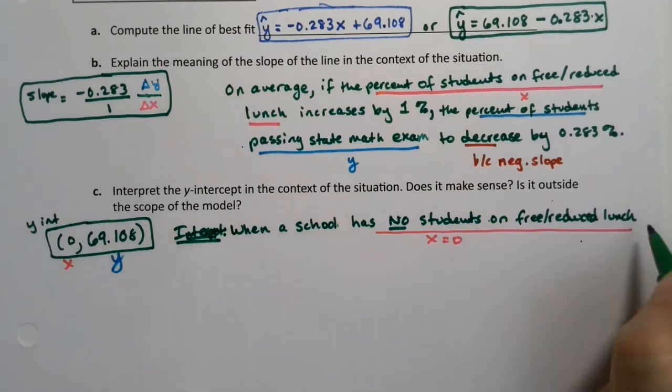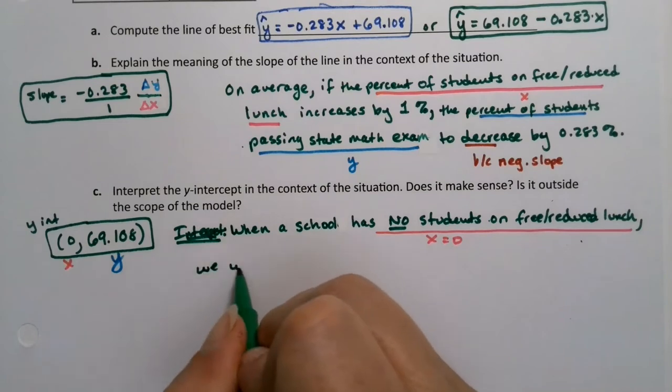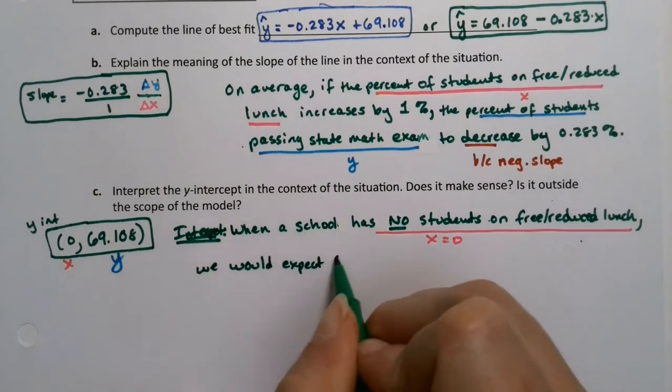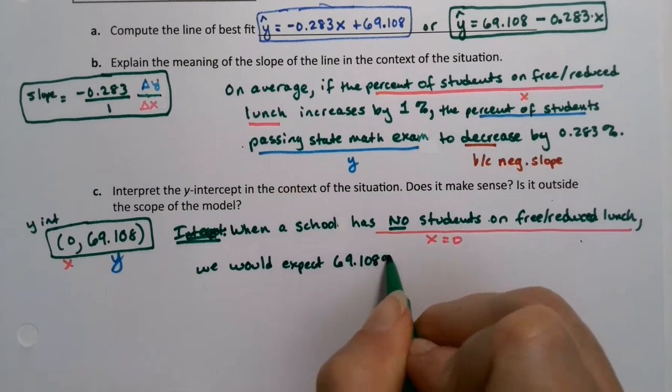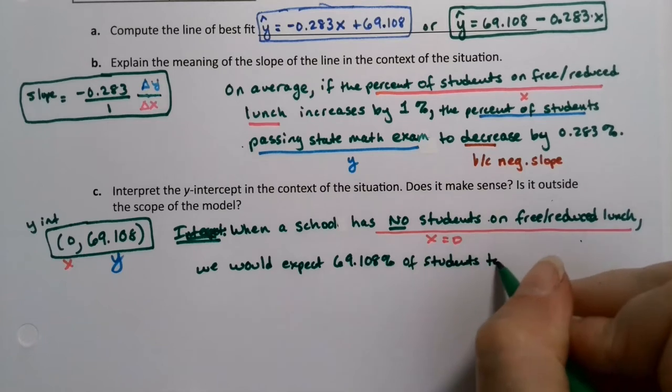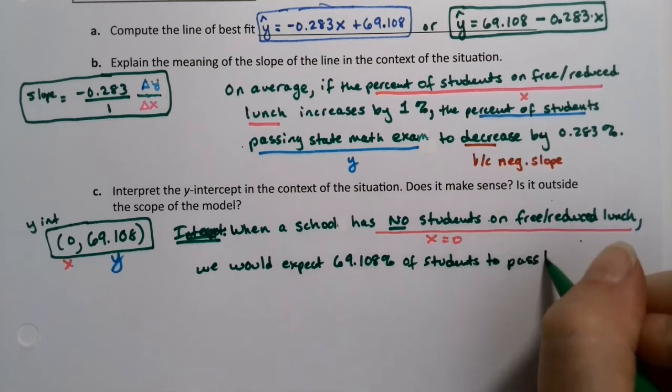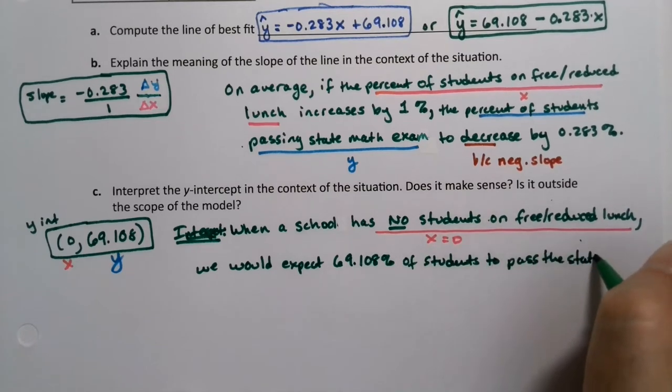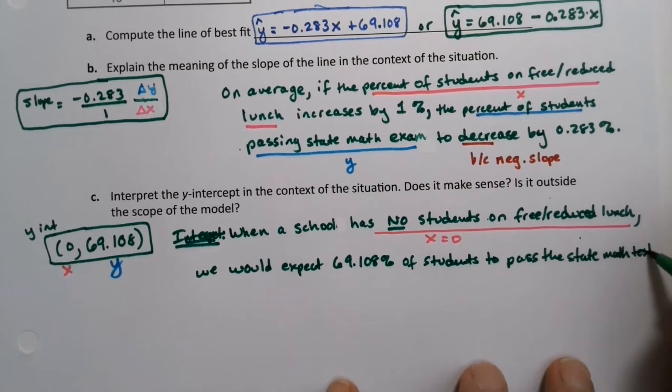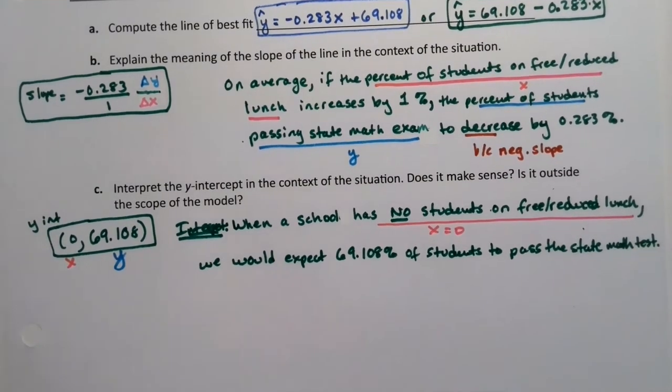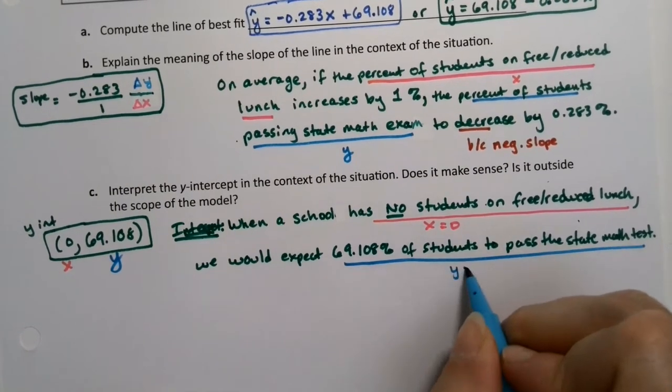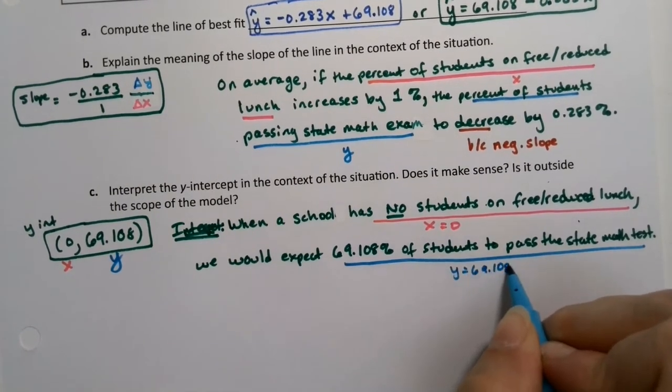then we would expect 69.108% of students to pass the state math exam. And that's all the y. That's y equals 69.108. That's what I'm interpreting right there.